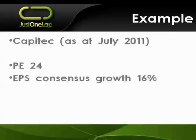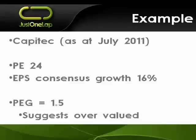The next example is Capitec, another stock that's been doing spectacularly well. We've got a price earnings of 24, but an earnings per share consensus growth of only 16%. 16% is not bad growth, particularly in the financial space and in this current environment. But it gives us a PEG of 1.5, which says this stock is overvalued if it's only going to be growing at 16%. I think the 16% might be a little conservative and the number could be higher — maybe around 20% to 30% — which suggests it's probably fairly priced on that sort of growth continuum going forward.